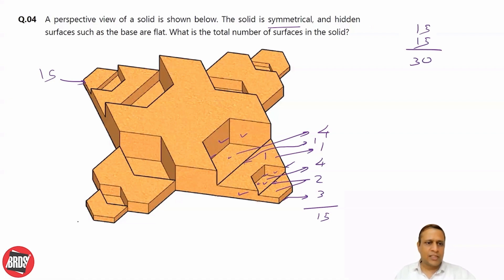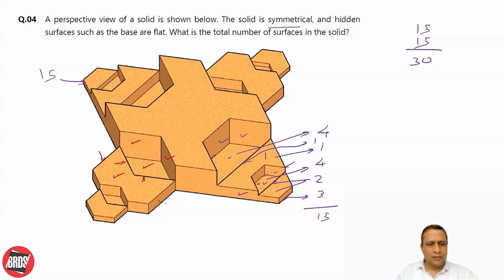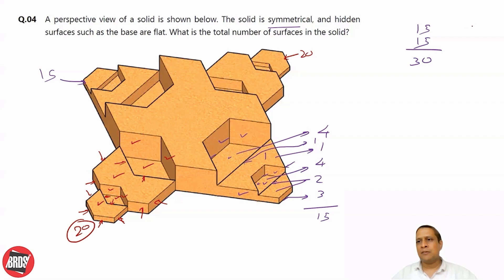Now checking over here on this solid: 1, 2, 3, 1, 2, 3, 4, 5, 6, 7, 8, 9, 10, 11, 12, 13, 14, 15 — 15 so far — 16, 17, 18, 19, 20. So 20 surfaces in this part. By symmetry, 20 surfaces on the other side as well, giving us 20 plus 20 — 40.